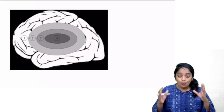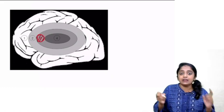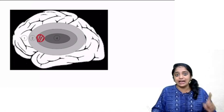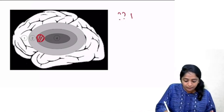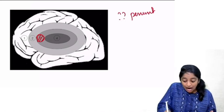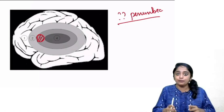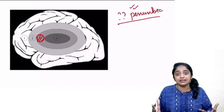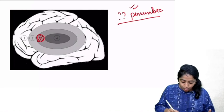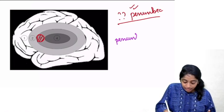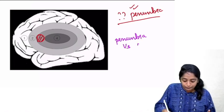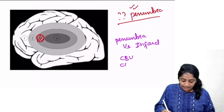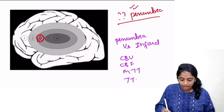In imaging of ischemic stroke, our aim is not just to diagnose infarct — we have to see whether there is a penumbra. If penumbra is present, the aim of thrombolysis and reperfusion is to target and save it. To differentiate penumbra from infarct, you need to be familiar with certain terms: CBV (cerebral blood volume), CBF (cerebral blood flow), MTT (mean transit time), and TTP (time to peak).